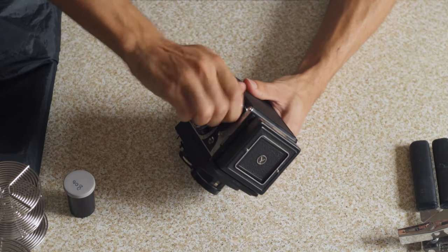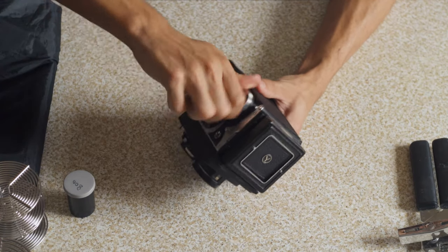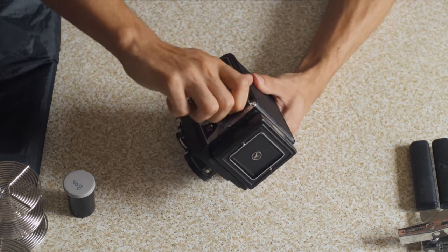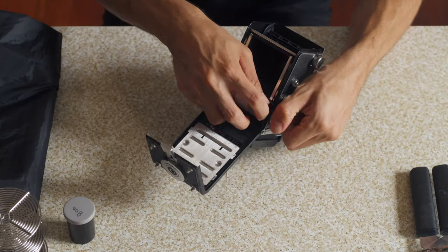If you're shooting 120, same idea. Reel your film all the way up into the take-up spool, open up the camera, take out the roll.